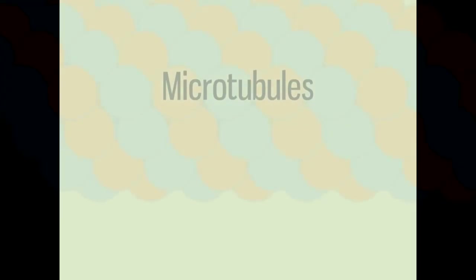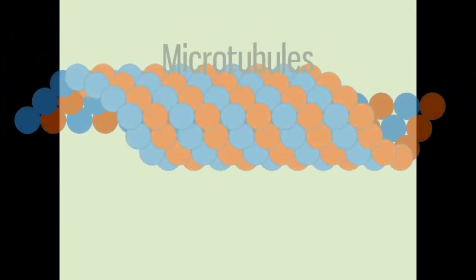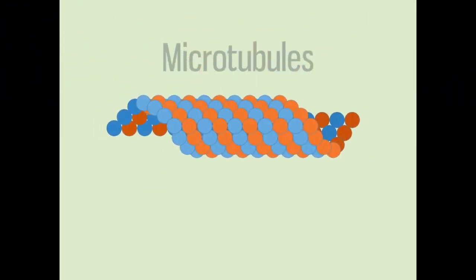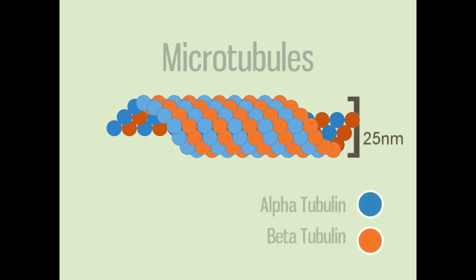Microtubules are the largest cytoskeletal structures. They are composed of pairs of tubulin protein molecules, alpha-tubulin and beta-tubulin. Long chains of tubulin pairs, or dimers, organize into a hollow tube shape.